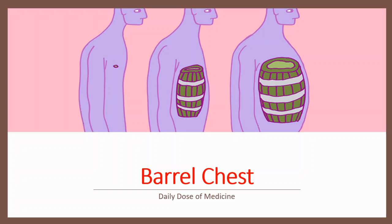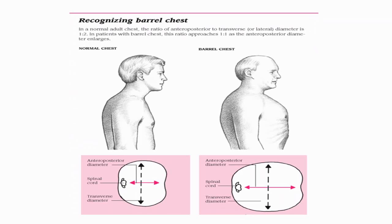Welcome or welcome back to Daily Dose of Medicine. In this video I will talk about barrel chest. In a normal adult chest, the anterior-posterior diameter and transverse diameter ratio is one to two. In patients with barrel chest, this ratio approaches one to one because the anterior-posterior diameter is enlarged. You can see the anterior-posterior diameter and transverse diameter from the image.